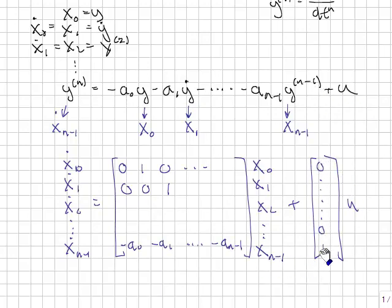And so I have a vector here, which is all zeros except for the last term, which is 1. So when I multiply by u, u only affects this last equation. Now I have n first-order differential equations. First-order because this is x dot over here.